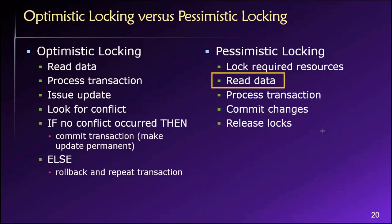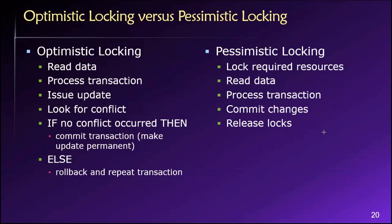When users are waiting, it lowers the performance of the database. The database constantly has to react to user requests, and we want to handle those requests in a timely fashion. So if we have this pessimistic locking strategy in place and resources are always locked, it may slow down the overall rate at which the database can process user requests.